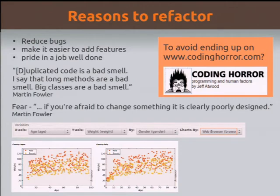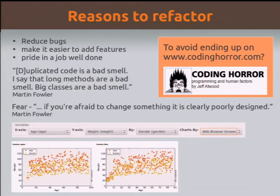Code smells include things like duplicated code, long methods, big classes — things to watch out for. But for me, the biggest sign that there's something horribly wrong with your code and you need to refactor it is fear. How do you feel when you look over your code base? You look at that bit and go, 'I like that bit.' Then you look at another and think, 'here there be dragons — I don't want to touch that.' If you're afraid to change something, that's a really good clue that there's something poorly designed.